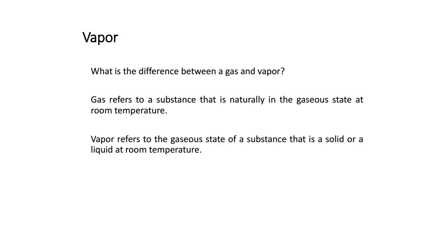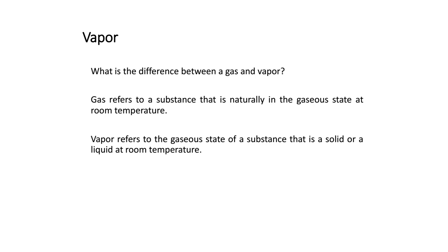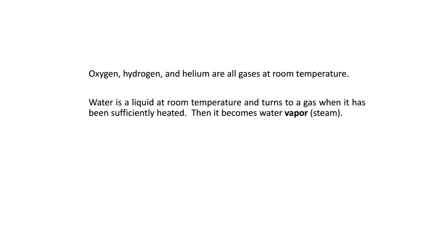What is the difference between a gas and a vapor? Gas refers to a substance that is naturally in the gaseous state at room temperature. Vapor refers to the gaseous state of a substance that is a solid or liquid at room temperature. Oxygen, hydrogen, and helium are gases at room temperature. Water is a liquid at room temperature and turns to a gas when sufficiently heated — it becomes water vapor. You'll never hear anyone say 'water gas'; it's always water vapor.